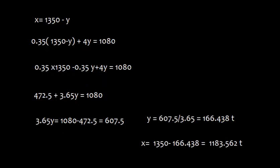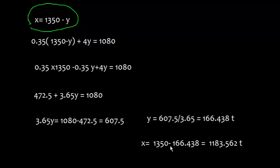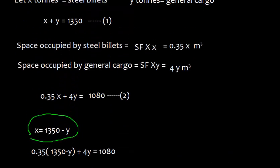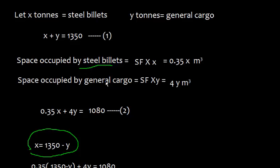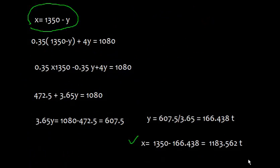Since x = 1,350 − y and y = 166.438 tons, we get x = 1,350 − 166.438 = 1,183.562 tons. So the maximum quantity of steel billets that can be loaded is 1,183.562 tons, and the quantity of overstowed general cargo is 166.438 tons.